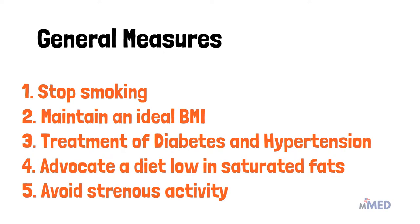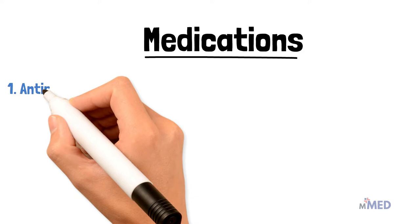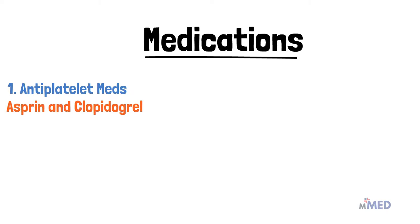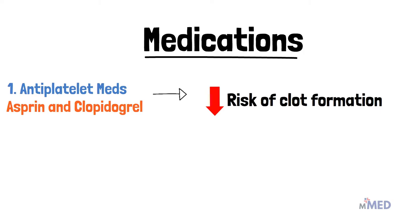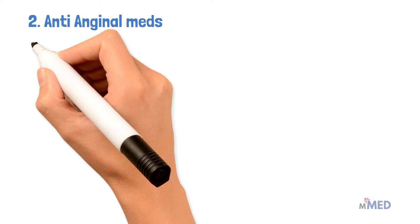When we speak about the medications given in the management of stable angina, one of the main medications is antiplatelet meds like aspirin and clopidogrel. These meds are usually given upon admission, and what these antiplatelet meds do is that they reduce the risk of clot formation in the coronary arteries.